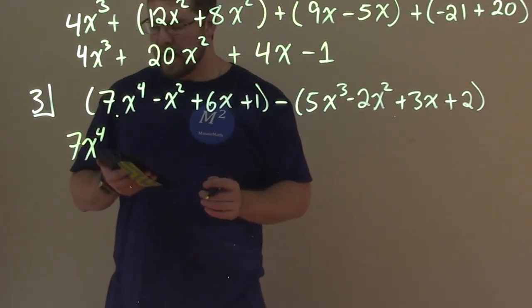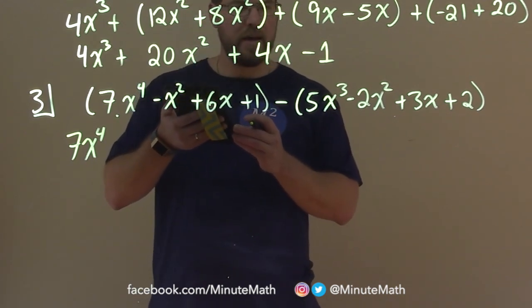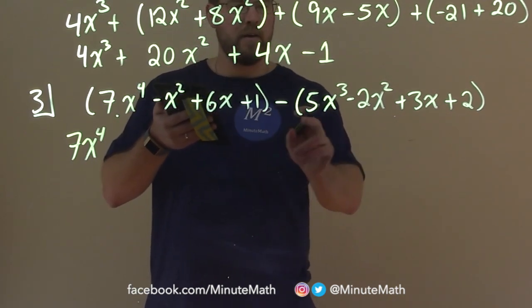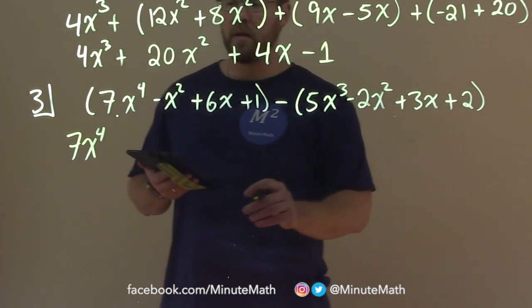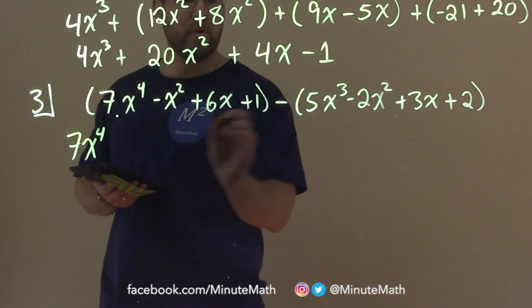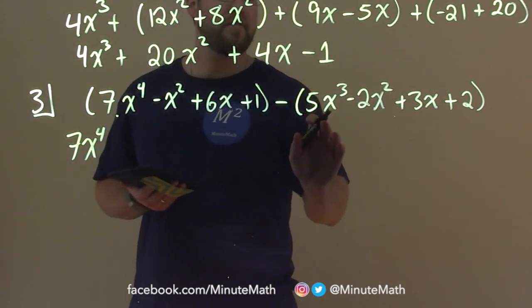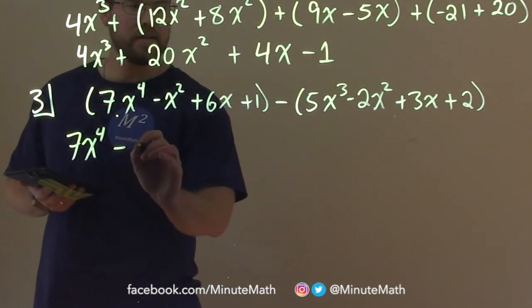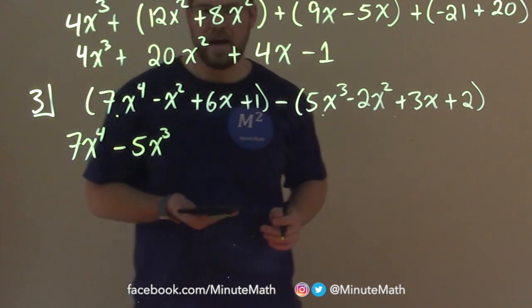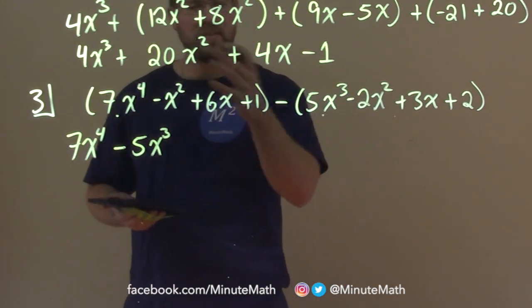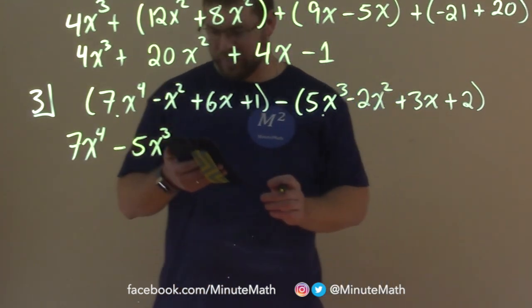Now the next highest degree, what do we have here? We have a 5x to the third, third power highest degree here. So we're going to bring that down. But notice since we're subtracting this whole thing, we have to subtract that 5x to the third here. So we're going to subtract a 5x to the third and bring that down. Don't forget that minus sign. This is the second way of doing it. It could be tricky, so you've got to be careful and take your time here.